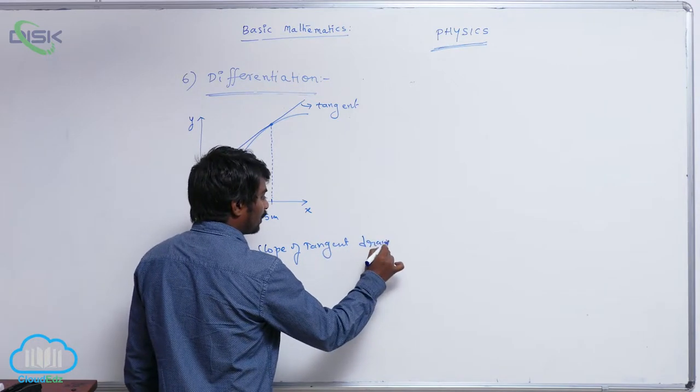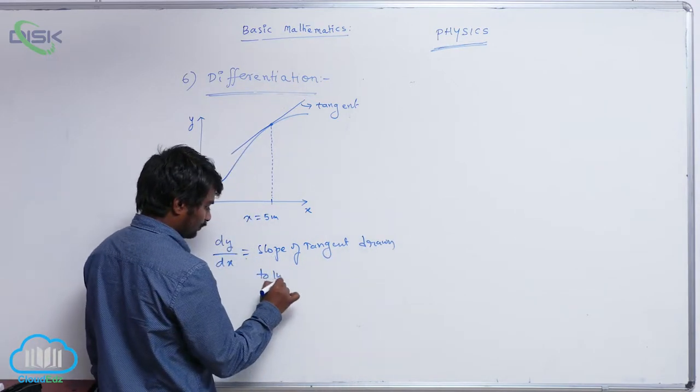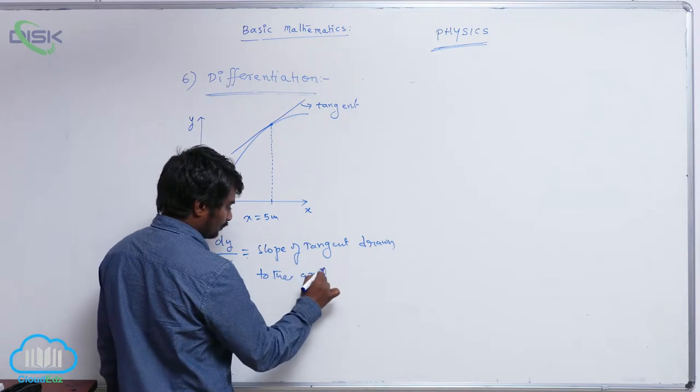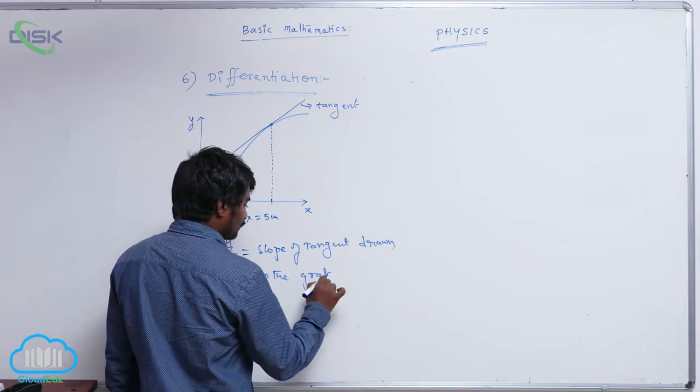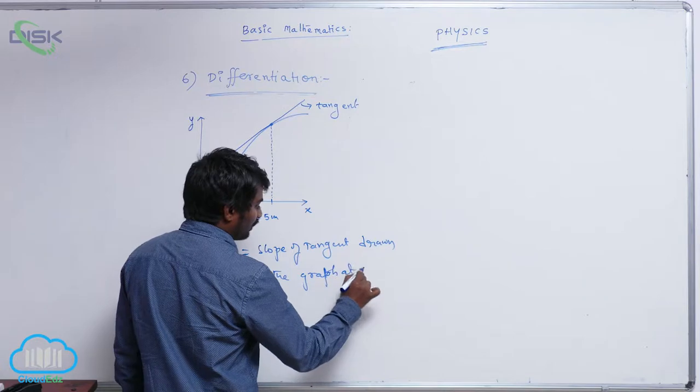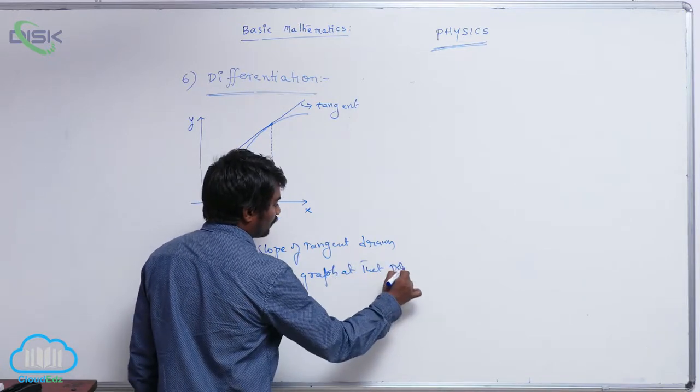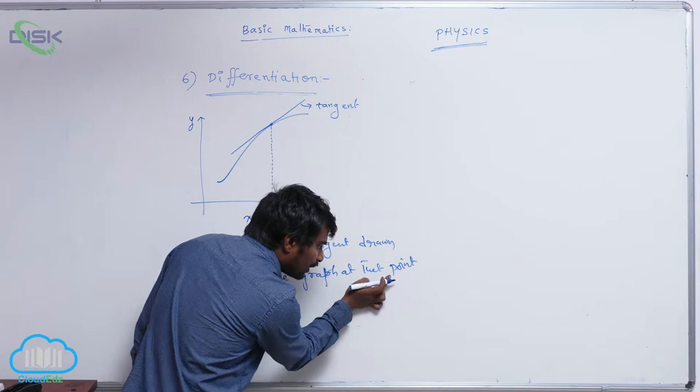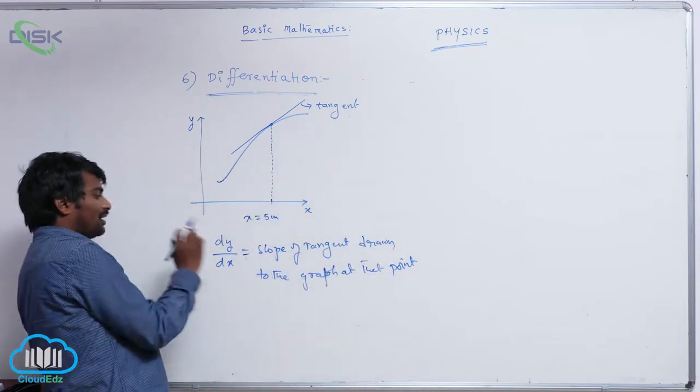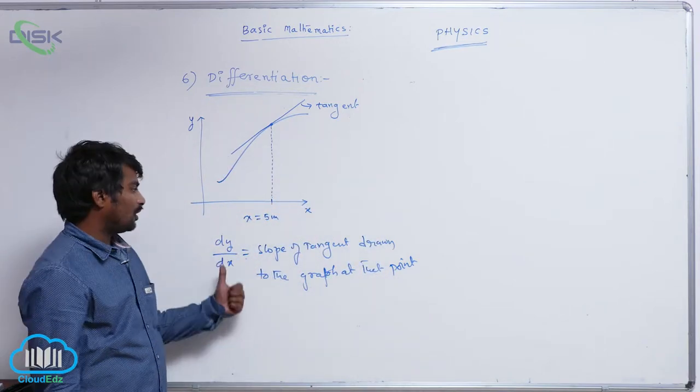So dy by dx gives you slope of tangent drawn to the graph at that point. At that point means which point? At which point you want to calculate?